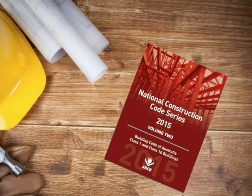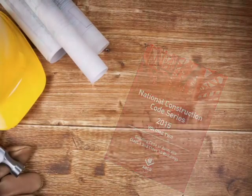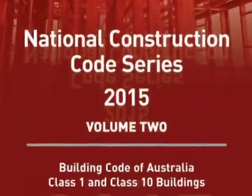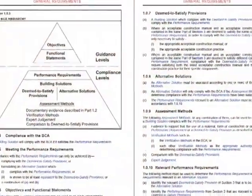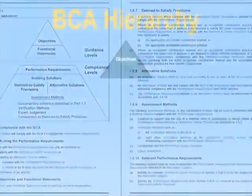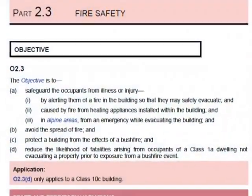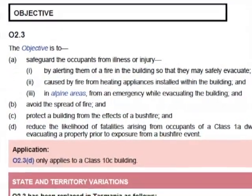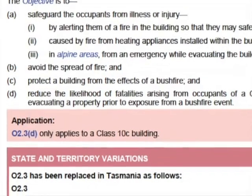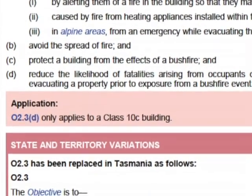The structure of the Building Codes of Australia comprises a hierarchy. Level 1 is the objectives — this is the first level in the hierarchy. It basically means a statement contained in the BCA which is considered to reflect community expectations. These objectives usually refer to the need to safeguard people, protect adjoining property and buildings, and the environment.